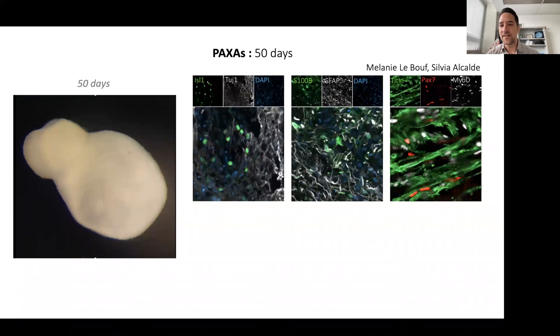Here, I'm very grateful for some help from Melanie, a postdoc in the lab, and Sylvia, a PhD in the lab. They have been working hard to do immunos on this tissue, and we've been very happy to see Islet1 positive motor neurons surrounded by many Tuj1 positive neuronal projections. We also see lots of astrocytic markers in these assembloids.